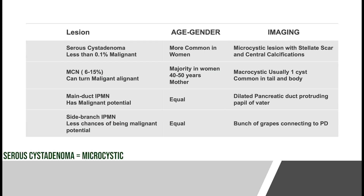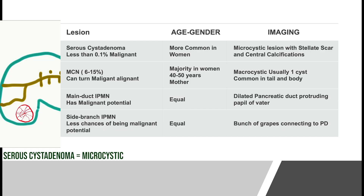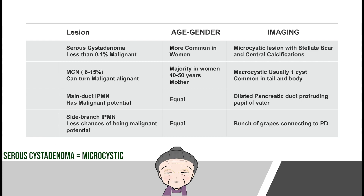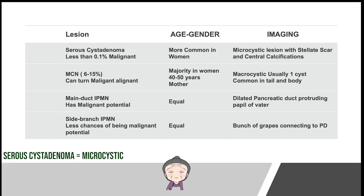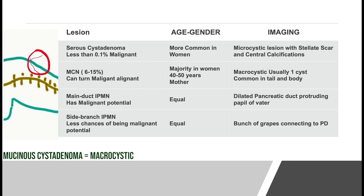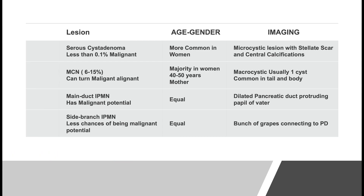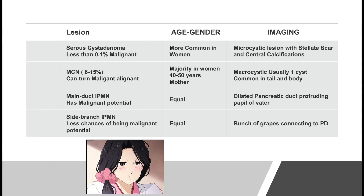Serous cystadenoma is a stellate lesion with central calcification; it occurs in elderly women of a grandmother's age group and has less chance of becoming malignant. Mucinous cystadenoma is a unilocular cystic lesion occurring more frequently in the body-tail region; it can turn malignant in 6 to 15 percent of individuals and occurs in middle-aged women of a mother's age group.